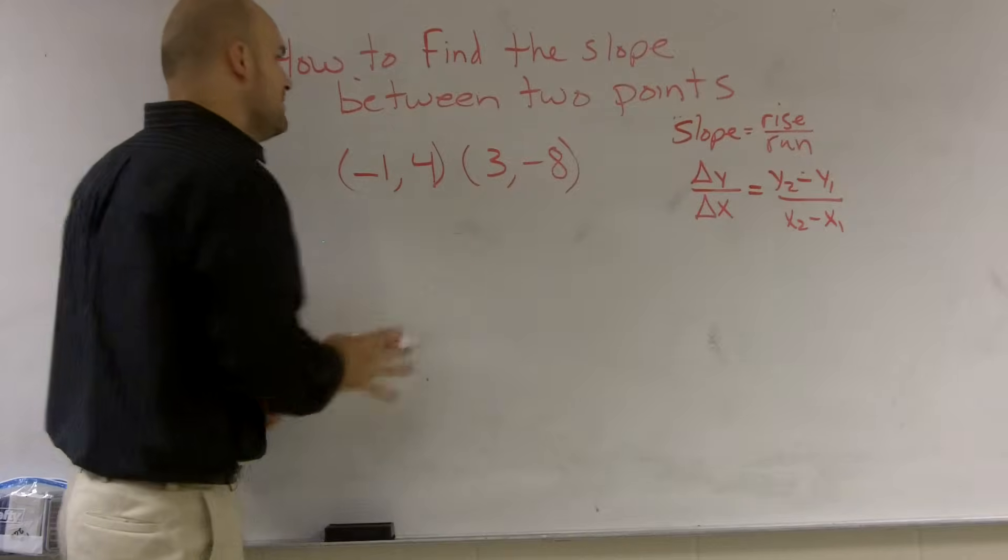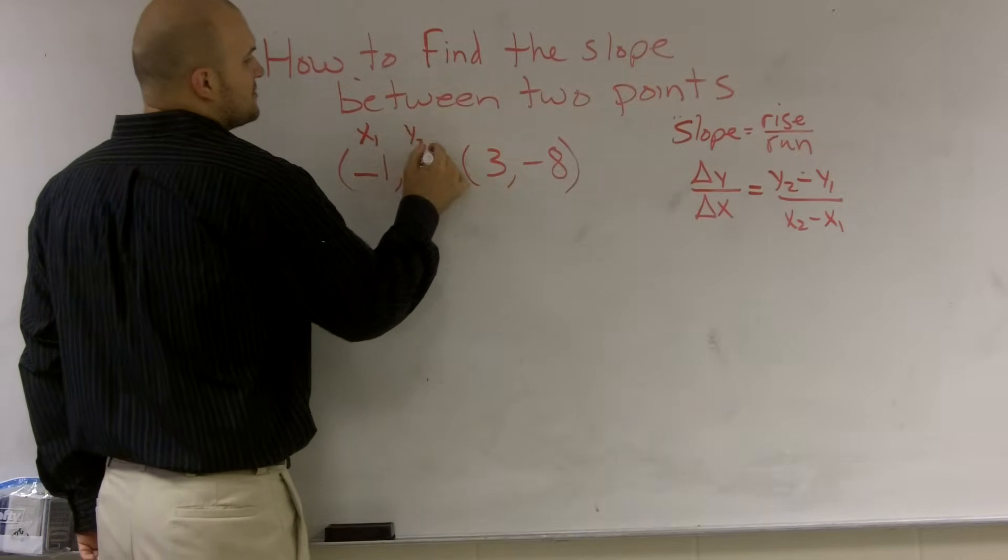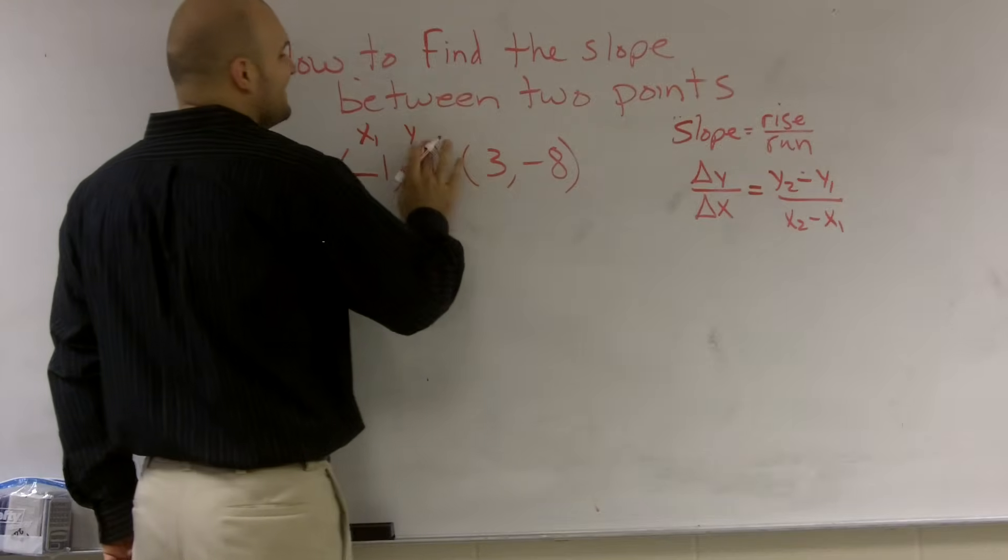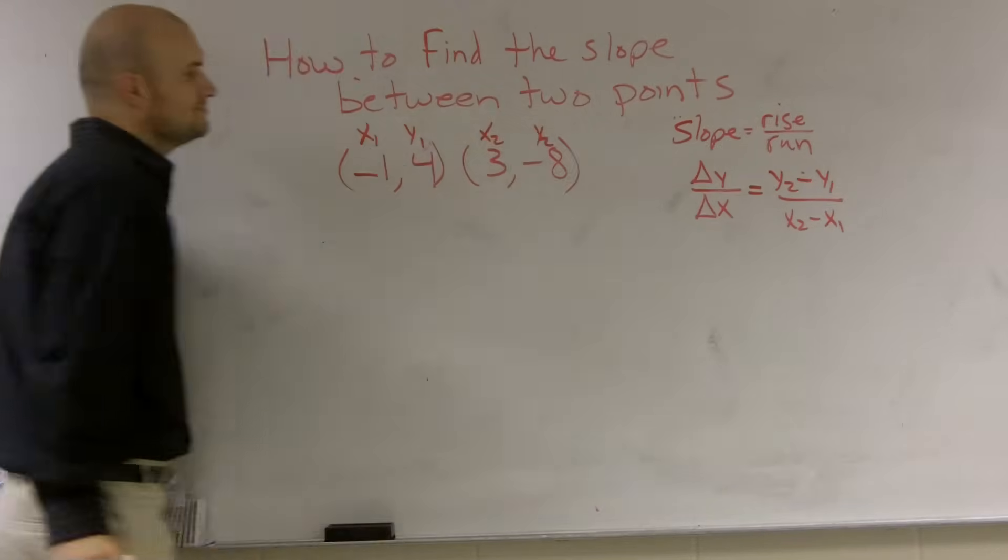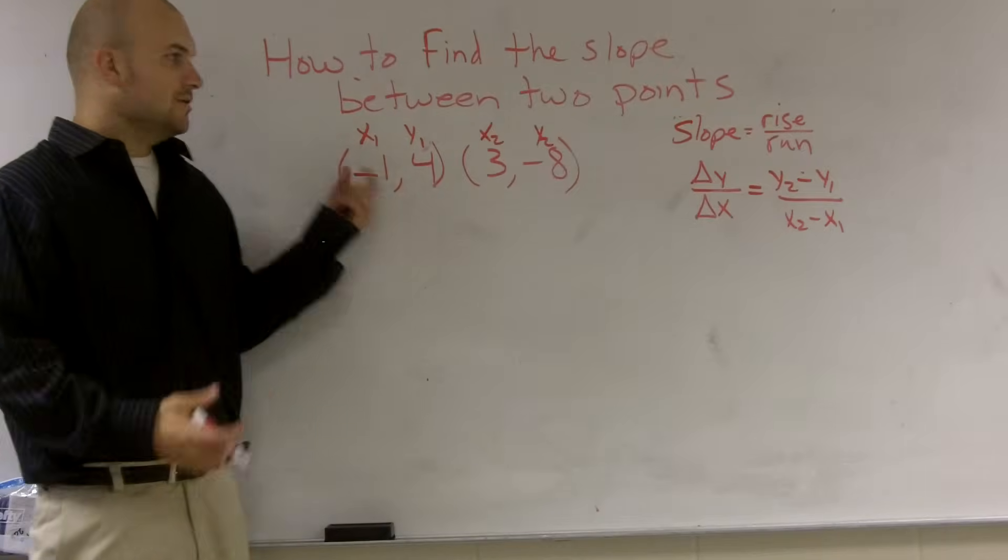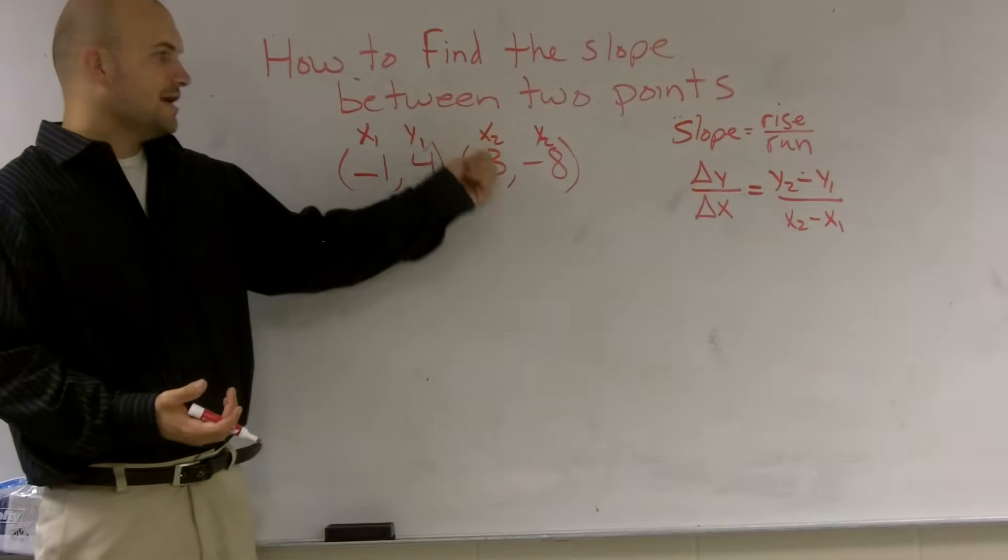It doesn't matter how you want to label them, which ones are x1 and which ones x2, but I'm going to say this one would be x1 and this one's y1. This one is x2 and this one is y2. Okay? So, because you remember on a coordinate point, you have your x and your y.